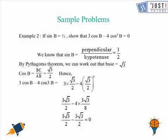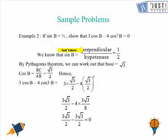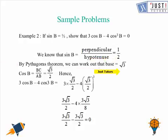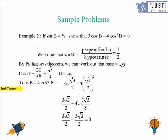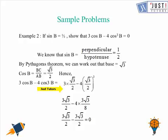Let us move to one more problem. It says: if sin B is equal to half, show that 3 cos B minus 4 cos cubed B is equal to 0. We are given sin B, and we know that sin B equals perpendicular upon hypotenuse. So perpendicular is 1 and hypotenuse is 2. With the help of Pythagoras theorem, we can work out the base which is root 3. So cos theta equals base over hypotenuse, which is root 3 over 2. Hence, we substitute the value of cos into 3 cos B minus 4 cos cubed B and we can work out that this equals 0.